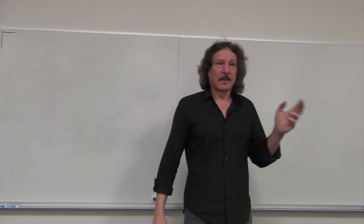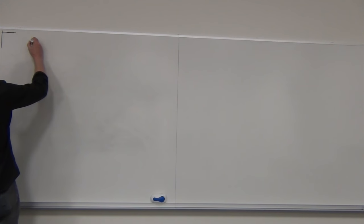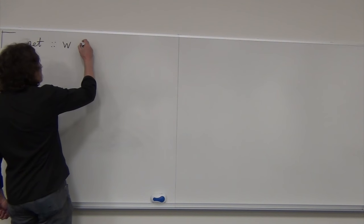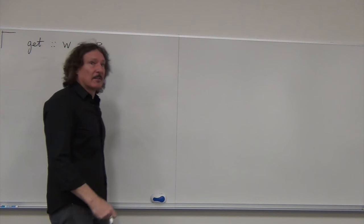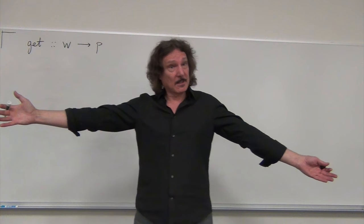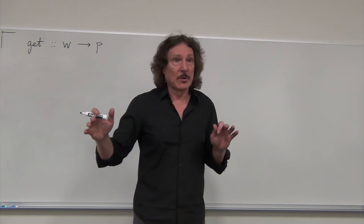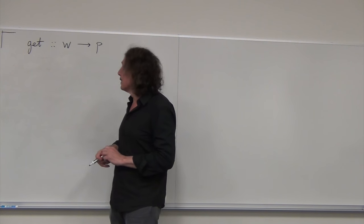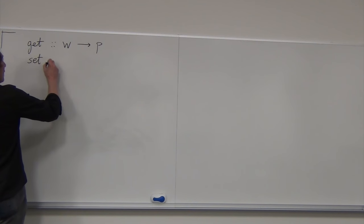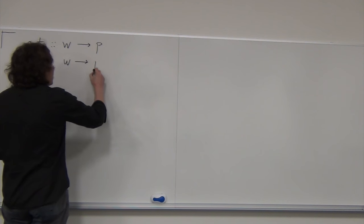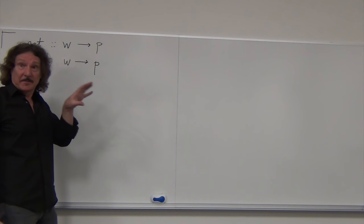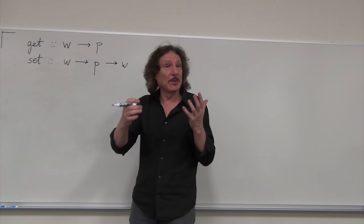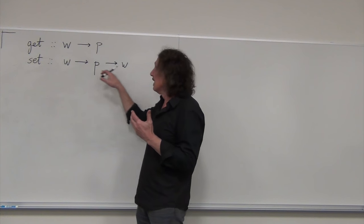So these two operations of getting and setting can be described as extracting a part of a whole. We have some whole thing and some part of it. Getting is a function that takes the whole tuple and returns the part. Setting takes the whole and a new value for the part — for a field in our tuple — and produces a new whole. This makes it pure, because you're not modifying anything in place; you're just creating a new whole.